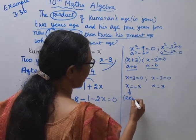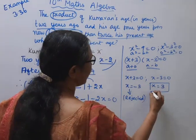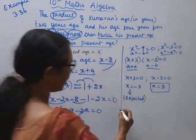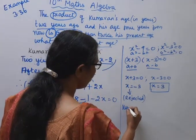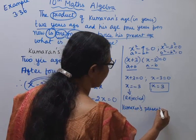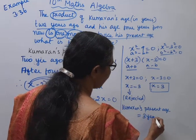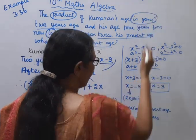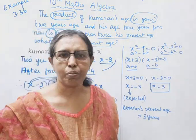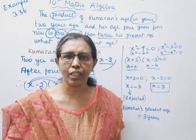Since age cannot be negative, x equals minus 3 is rejected. Therefore x equals 3. Kumaran's present age is equal to 3 years. This channel helps you to get 300 marks — subscribe to the channel and click the bell button.